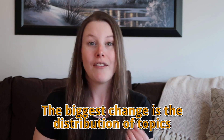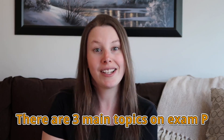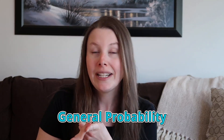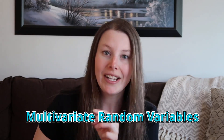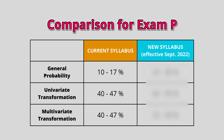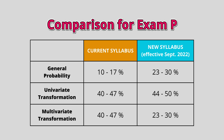There has been a reallocation of the topics. There are three main high-level topics tested on Exam P: general probability, univariate random variables, and multivariate random variables. Here is how the distribution of topics is going to change. For general probability, right now on the current syllabus about 10 to 17 percent of the exam tests general probability. In the September exam and beyond it's going to be about 23 to 30 percent. So general probability is being tested a bit more than it was in the past.